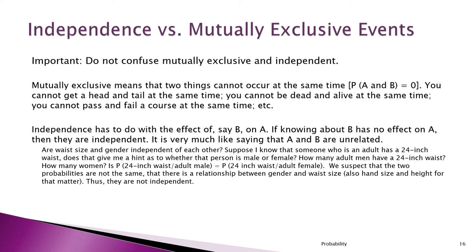For example, take waist size and gender — are they independent? Suppose you know someone has a 24-inch waist. Would that give you a hint about whether that person is male or female? We can figure that out because the probability of having a 24-inch waist given you're female is not the same as the general probability of a 24-inch waist. The minute I know someone has a 24-inch waist, I'm quite certain they're highly likely to be female — very few men have a 24-inch waist.